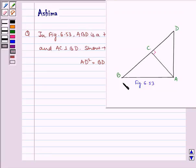Now let us see the figure. We have ABD is a triangle right angled at A and AC is perpendicular to BD.